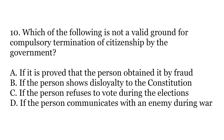Tenth and last question is: which of the following is not a valid ground for compulsory termination of citizenship by the government? Three of them are valid grounds while one is not. The options are A. If it is proved that the person obtained citizenship by fraud, B. If the person shows disloyalty to the constitution, C. If the person refuses to vote during the elections, or D. If the person communicates with an enemy during war.